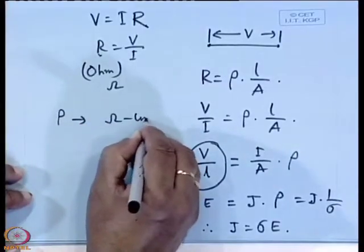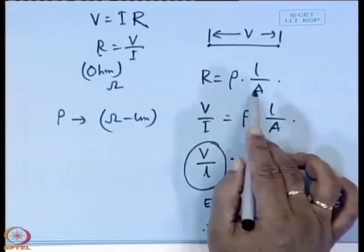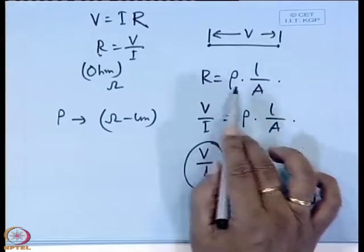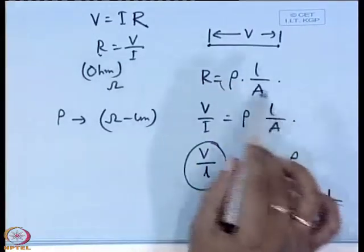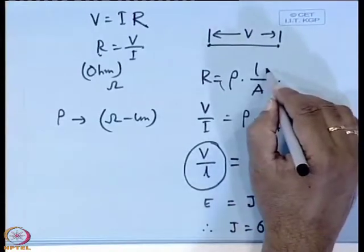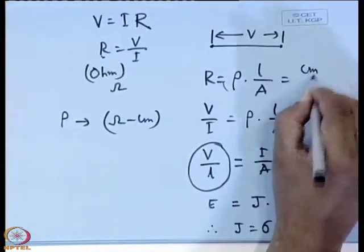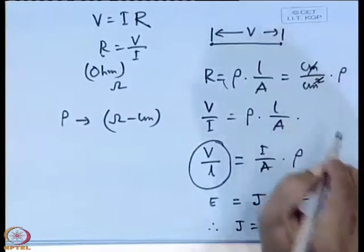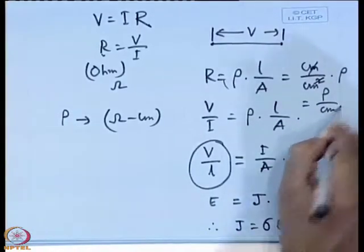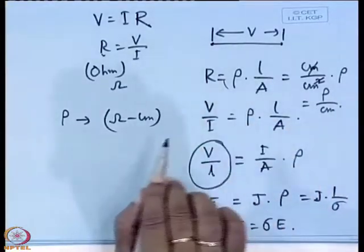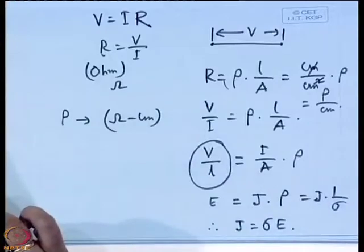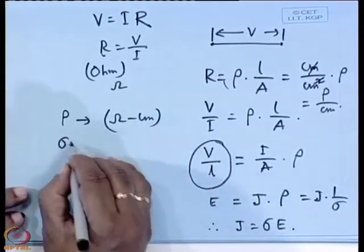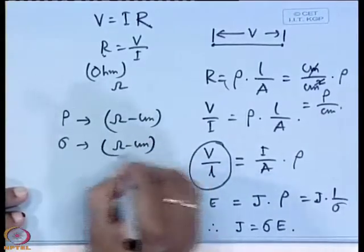From the relation R = ρ·L/A, we can derive the unit of ρ: since R is in Ohm, L in centimeter, and A in centimeter squared, ρ works out to Ohm·centimeter. Accordingly, the unit of conductivity σ is the inverse: (Ohm·centimeter)⁻¹.